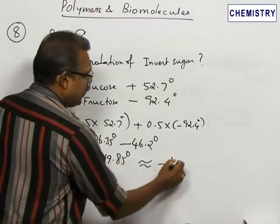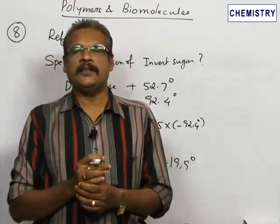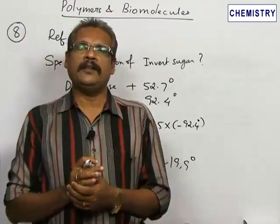So that can be taken as 19.9 degrees. Therefore, invert sugar the specific rotation is minus 19.9 degrees.